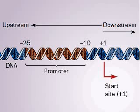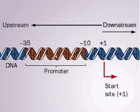Genes have binding sites for RNA polymerase called promoters. In E. coli, consensus promoter sequences are located upstream from the transcription start site, centered at minus 10 and minus 35 base pairs.